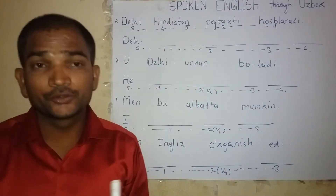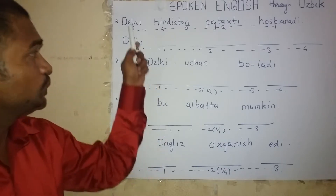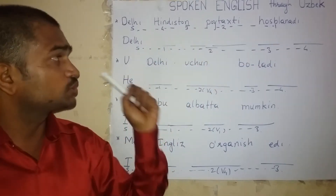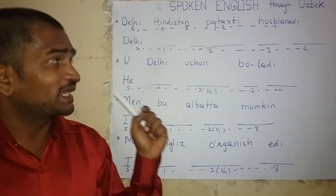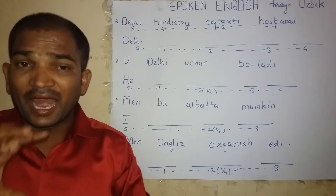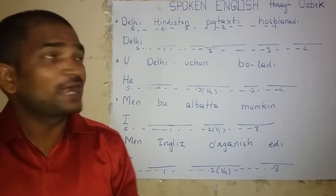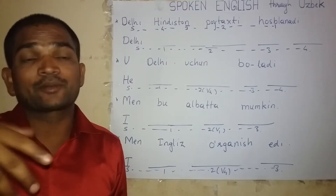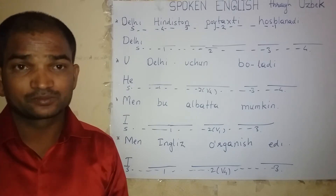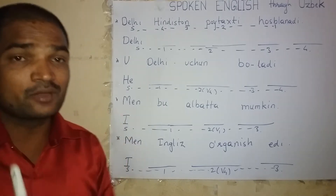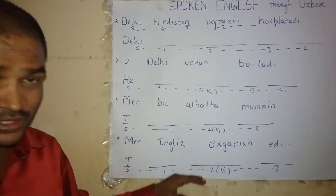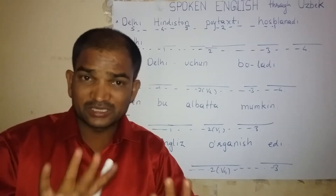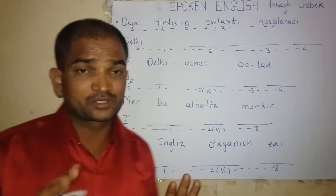Now, what should you do? You should look at this Uzbek sentence — Delhi, Hindustan, Poetaxi, Husbandi — and try to speak the sentence in English, again and again, about 100 times. While trying orally, below this video there is a comment box. You should try to type the sentence in the comment box.